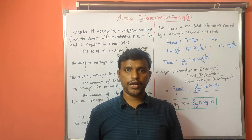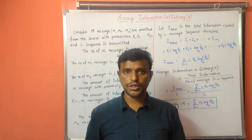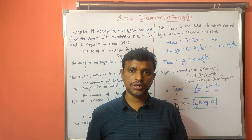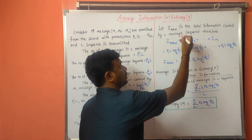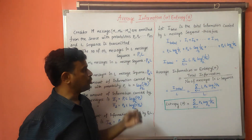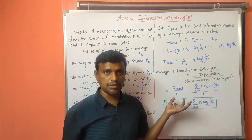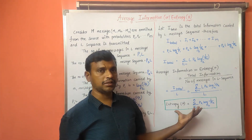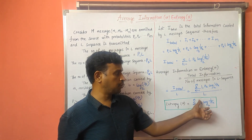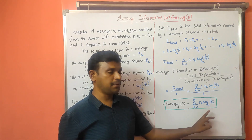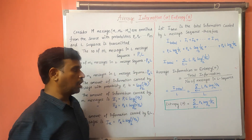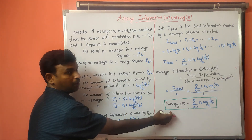Hello everyone. Today I am going to explain about the average information or the entropy. The average information or the entropy can be represented with the capital H. To calculate this average information we have the formula: entropy H is equal to summation k equals 1 to m, p_k log of 1 by p_k to the base 2. Now I am going to explain how we derive this formula.